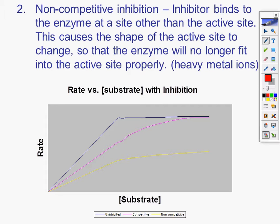Non-competitive inhibition. Inhibitor binds the enzyme at a site other than the active site. Maybe on the far left side or on the backside of it. This causes the shape of the active site to change so the enzyme will no longer fit into the active site properly. Heavy metal ions. Very simple. We have uninhibited, we have competitive, and then we have our non-competitive where our rate has definitely dropped a ton.